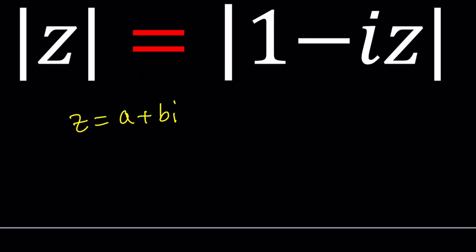In general, for these kinds of questions, you can replace Z with A plus BI. Does that look familiar? A plus BI. Don't forget that. Now, if we do it on both sides, let's go ahead and evaluate absolute value of Z from here. It's going to be the absolute value of A plus BI, which is going to be the square root of A squared plus B squared, right?